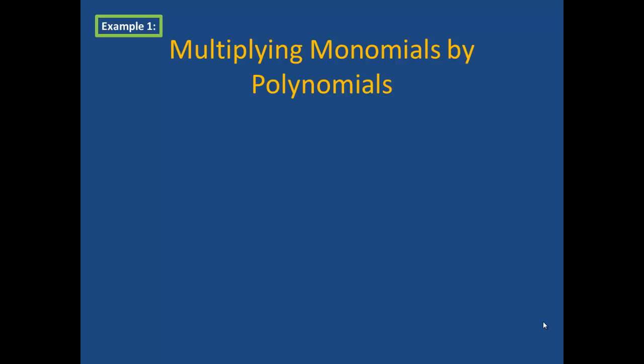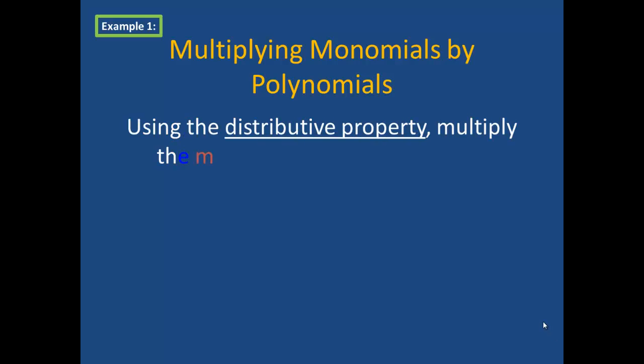When multiplying monomials by a polynomial, we use the distributive property. We've been using this property all year when solving equations, so really this is nothing new. But we have to make sure that we multiply the monomial by every term in the polynomial.